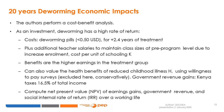The authors also carried out a cost-benefit analysis, providing good arguments that deworming has a very high rate of return as an investment. The cost is fairly low — deworming pills at less than half a dollar for 2.4 years of treatment. The authors also impute additional teacher salaries to maintain class sizes at pre-program levels due to increasing enrollment, and the cost per unit of schooling. The benefits are the higher earnings in the treatment group.